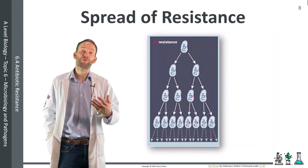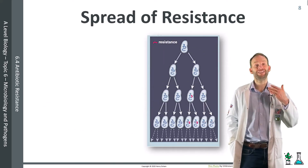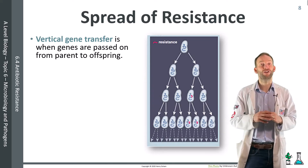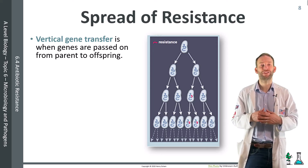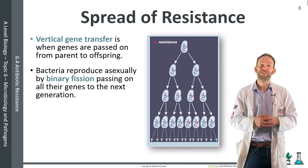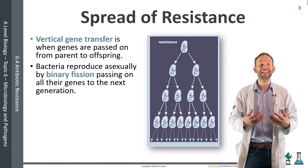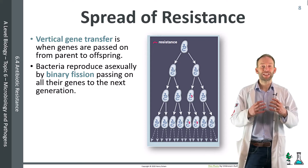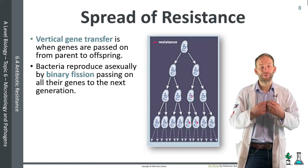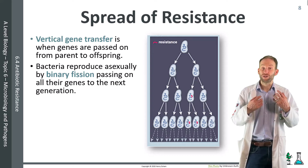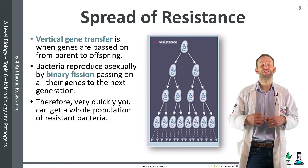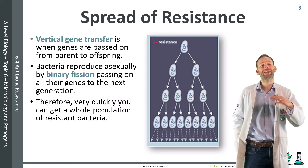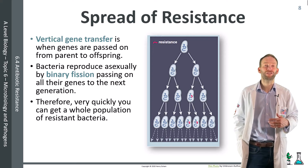One way resistance spreads is vertical gene transfer, where resistance genes are passed from parent to offspring. Bacteria reproduce asexually by binary fission, passing on all their genes to the next generation. When a resistance gene appears via mutation and an antibiotic is present, this creates a strong selection pressure. The bacteria with the resistance gene survive, reproduce, and pass that gene on, very quickly producing a whole population of resistant bacteria via natural selection.